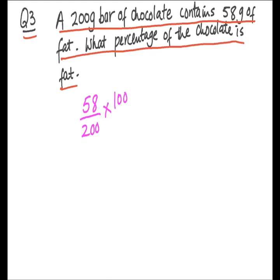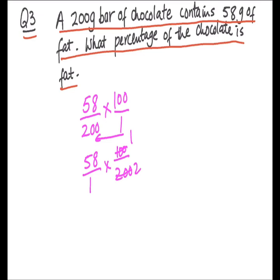We write 100 as a fraction over 1, then change the position of the denominator: 200 goes under the 100. We know 100 times 2 is 200, so that simplifies. Now we have 58 over 1 and 1 over 2 in numerator and denominator respectively. Numerator times numerator: 58 times 1 is 58, and denominator times denominator: 2 times 1 is 2. So 58 divided by 2 is 29. The answer is 29%. The fat content in the chocolate bar is 29%.